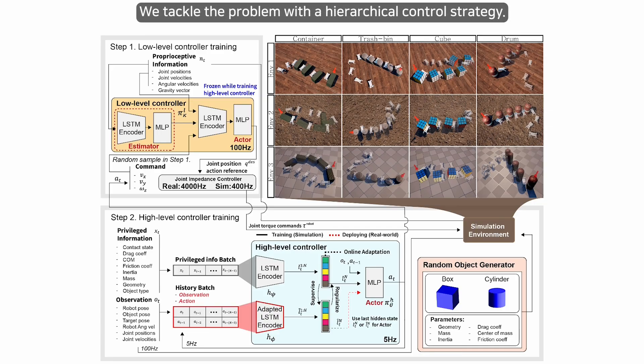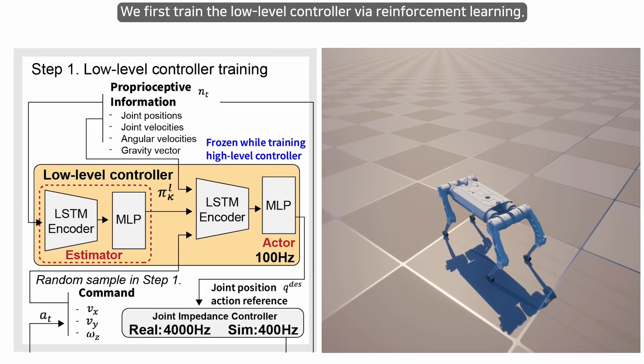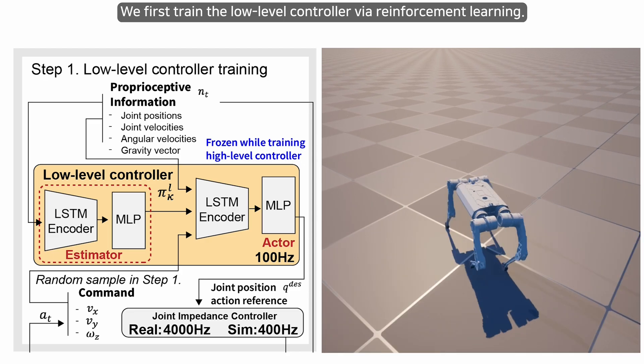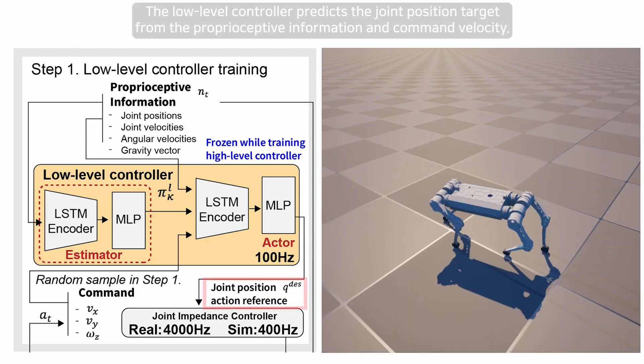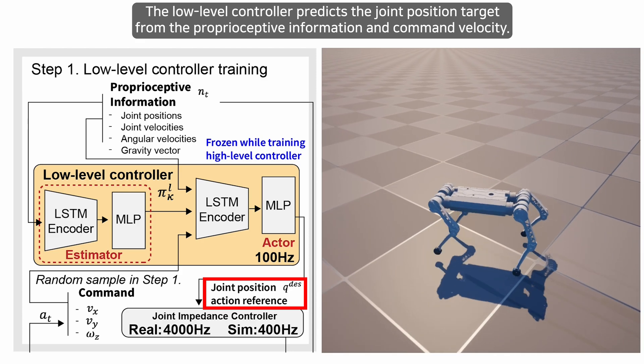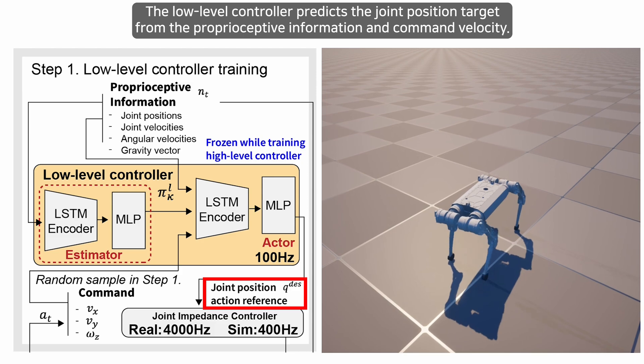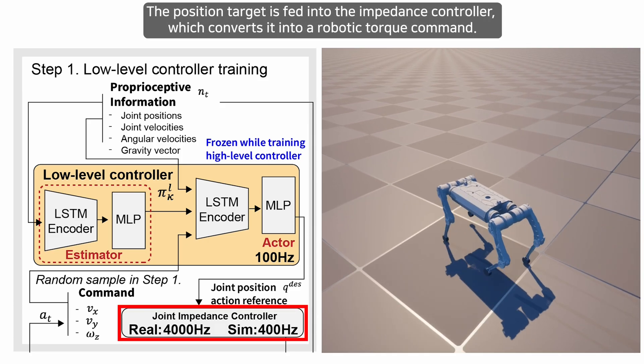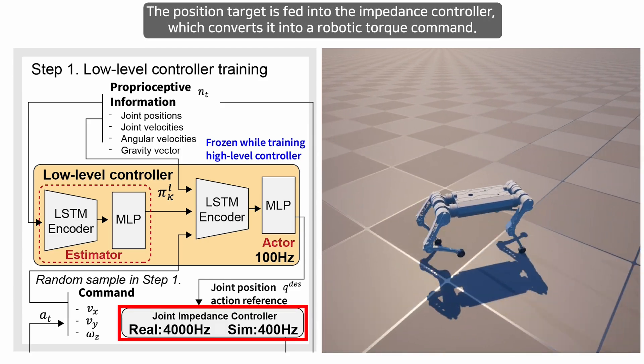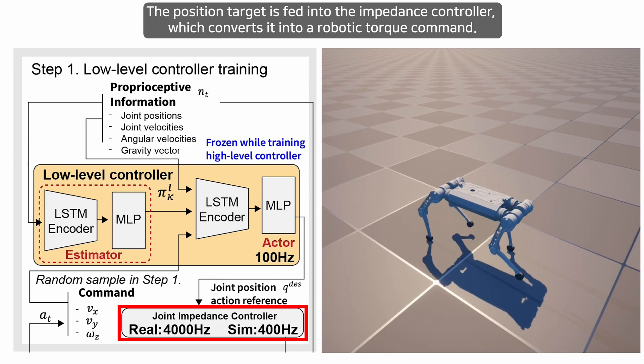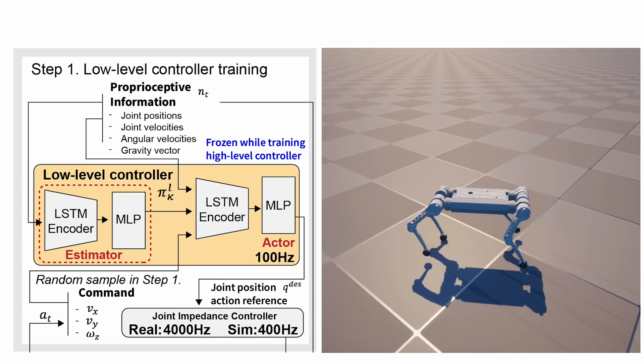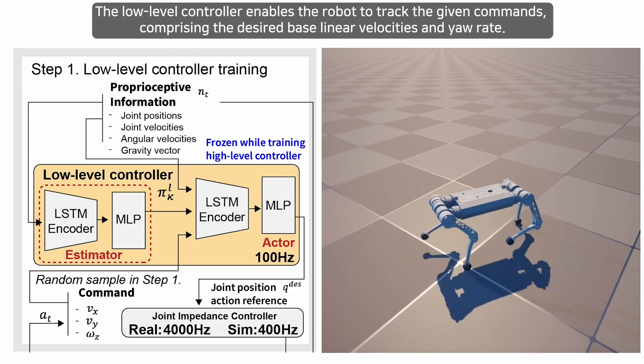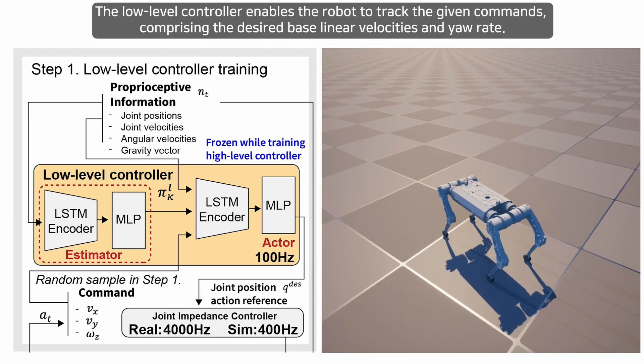We tackle the problem with a hierarchical control strategy. We first train the low-level controller via reinforcement learning. The low-level controller predicts the joint position target from the proprioceptive information and command velocity. The position target is fed into the impedance controller, which converts it into a robotic torque command. The low-level controller enables the robot to track the given commands, comprising the desired base linear velocities and yaw rate.